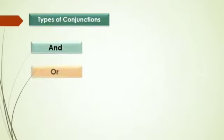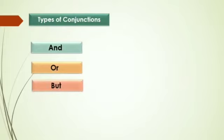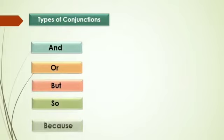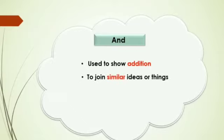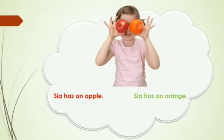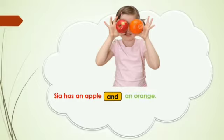Some of the commonly used conjunctions are: and, or, but, so, because, etc. Let's start with the conjunction 'and.' The conjunction 'and' is used to show addition, or you can say it is used to join similar ideas or things. Here is an example: Sia has an apple. Sia has an orange. These become: Sia has an apple and an orange. Here, 'and' is used to join the things apple and orange.